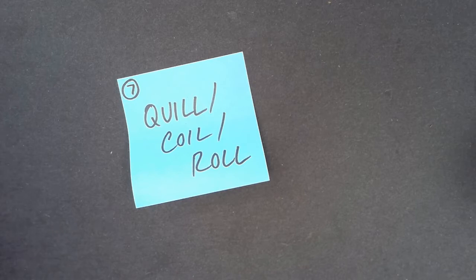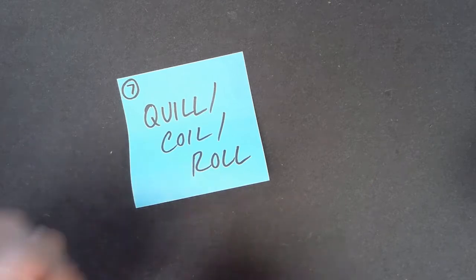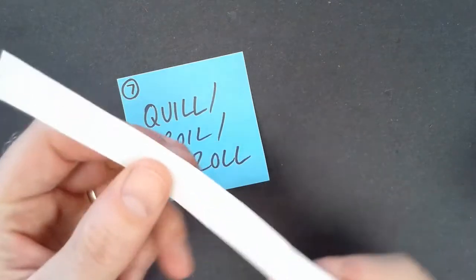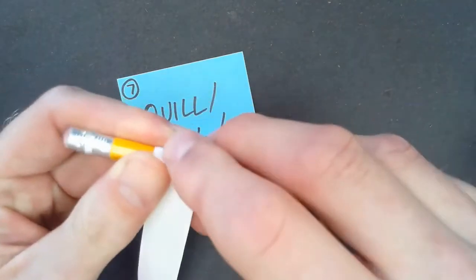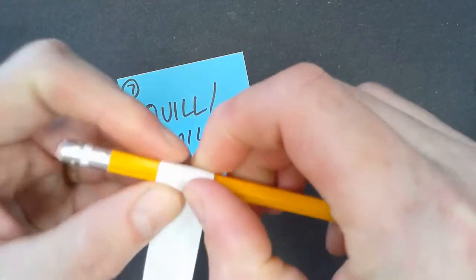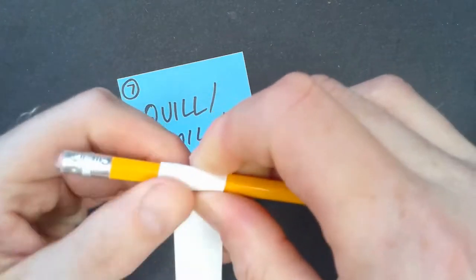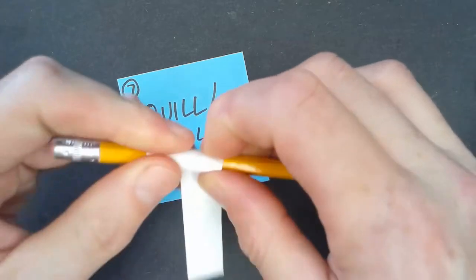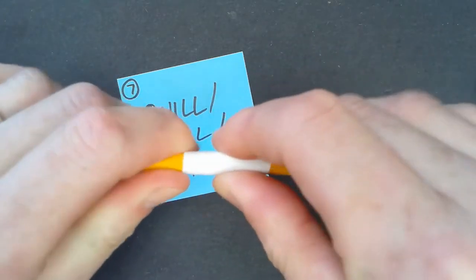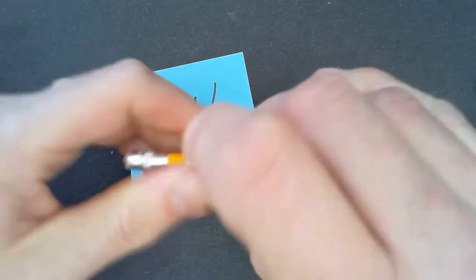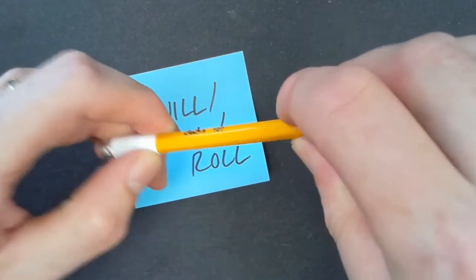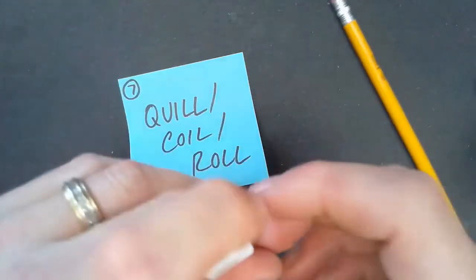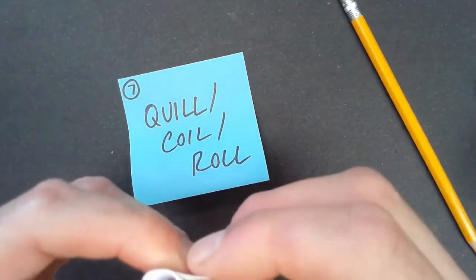To do a coil or a quill, you want to start with a strip of paper. And you can just very basically take a pencil and wrap it tightly around the pencil, in essence kind of just curling around the pencil. Once it's completely wrapped around, you're going to slide it carefully off the pencil and secure the end of the coil.